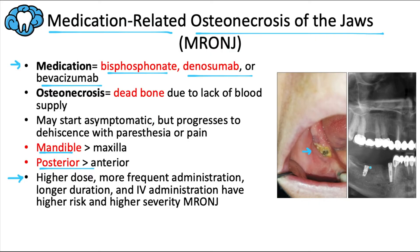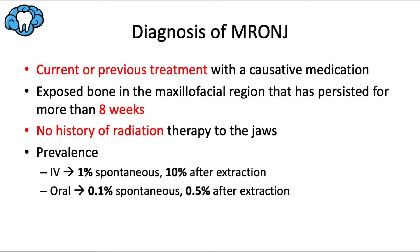Why are the jaw bones more commonly affected, and why don't we see this affecting other bones in the body? The theory is that the jaw bones are more at risk due to the constant microtrauma caused by continuous mastication. We need three things for an official diagnosis of MRONJ: first, a current or previous treatment with one of those causative medications; second, exposed bone in the maxillofacial region that has persisted for more than eight weeks; and third, there can't be a history of radiation therapy to the jaws — because that would instead point to osteoradionecrosis, which has similar symptoms but a different etiology.